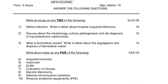Write an essay on any two of the following. They will be giving 3 essay questions; out of those 3, you have to answer only 2. First question: Define infection. Write in detail about hospital acquired infections, for 15 marks.